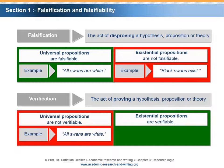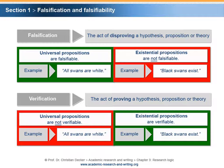Existential propositions are verifiable. Again, our example of an existential proposition is 'black swans exist.' This sentence is verifiable, either because of the proof that black swans exist, or because of the possibility that someone might prove the existence of black swans.